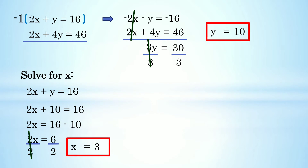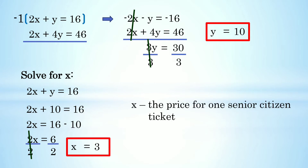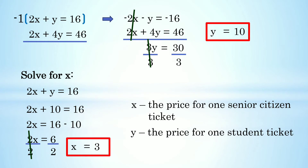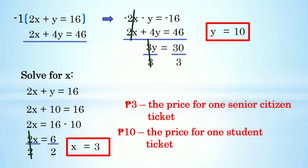To check your answer, palitan lang yung value ng ating x at y sa equations at kailangan mag-equal siya — kailangan pareho silang true. So i-final answer na natin: x, the price for one senior citizen ticket, has a value of 3, and y, the price for one student ticket, has a value of 10. So our answer is 3 pesos for one senior citizen ticket and 10 pesos for one student ticket. Ayan madali lang po, diba?